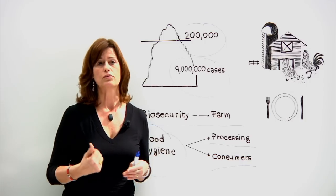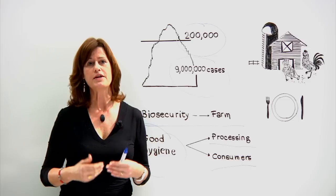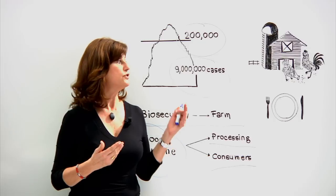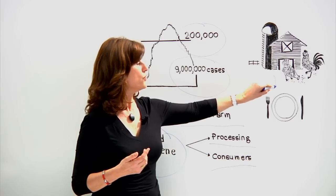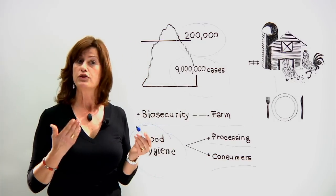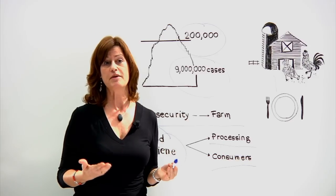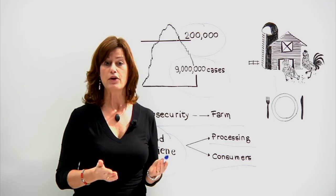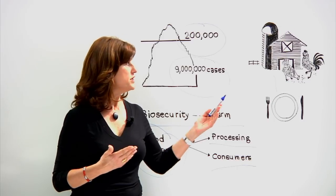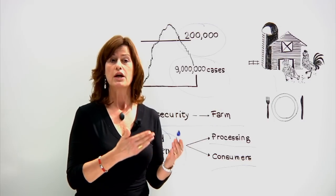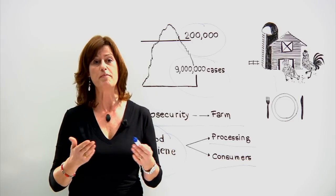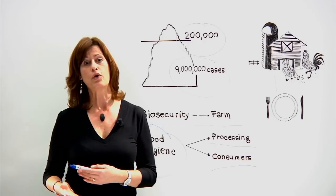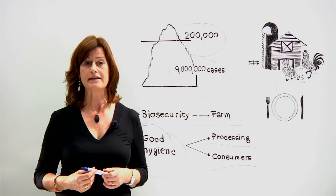What can you do to help avoid getting Campylobacteriosis? You can ensure that you cook meat thoroughly before eating, that you implement good hygienic practices in your kitchen by thoroughly washing hands, and by avoiding cross-contamination. That means washing the utensils you have used to prepare meat, such as knives and cutting boards, when you then prepare salads and vegetables.